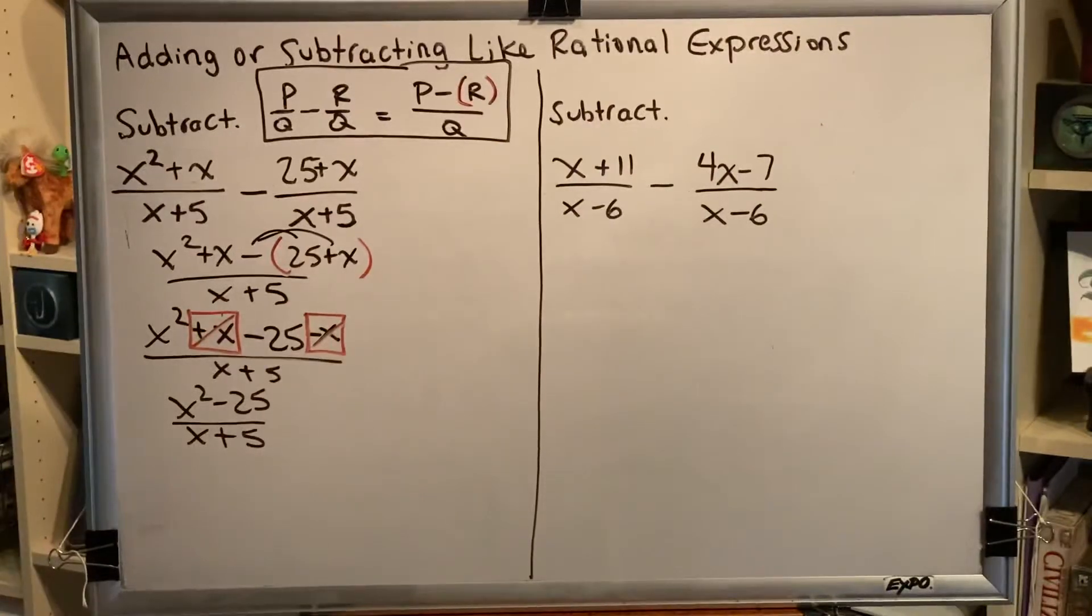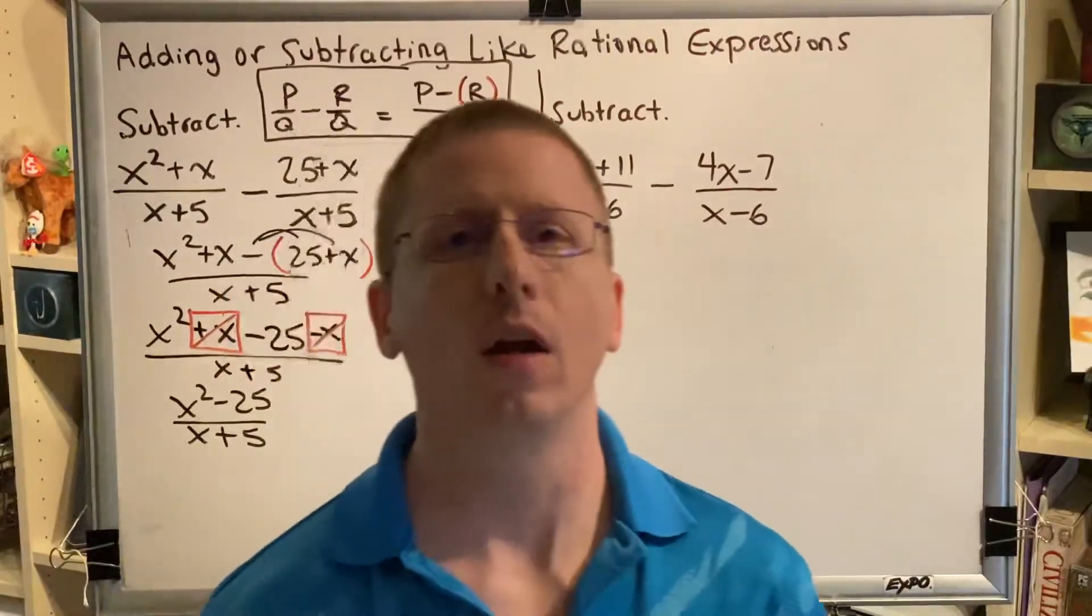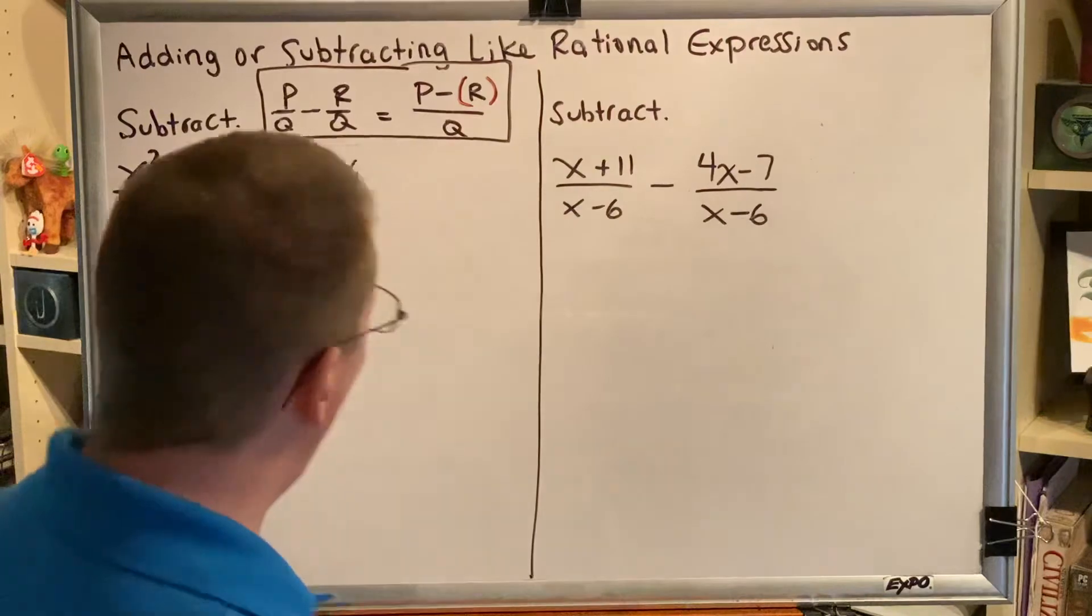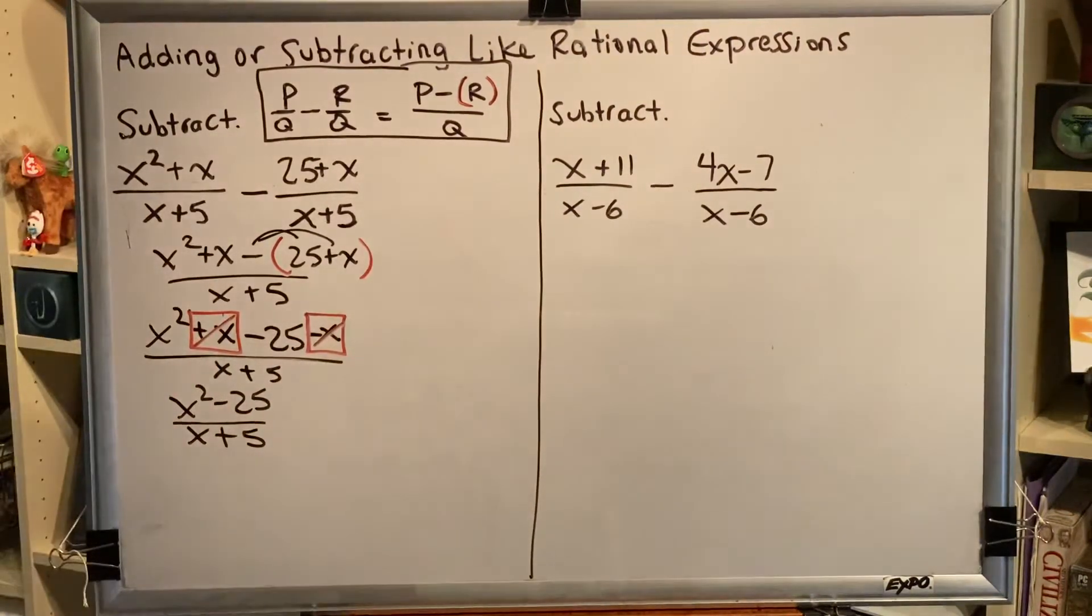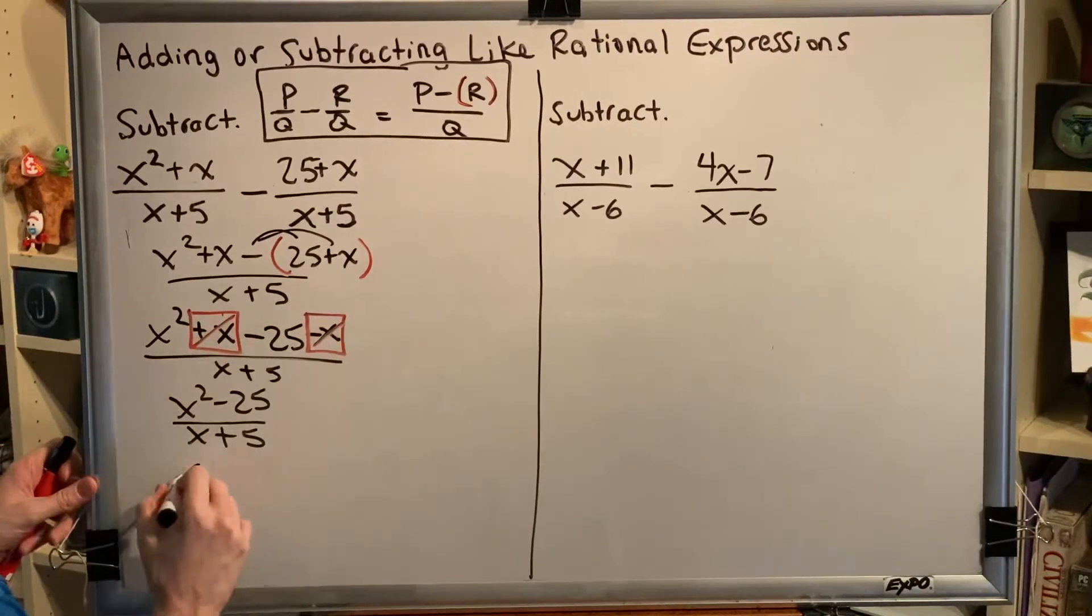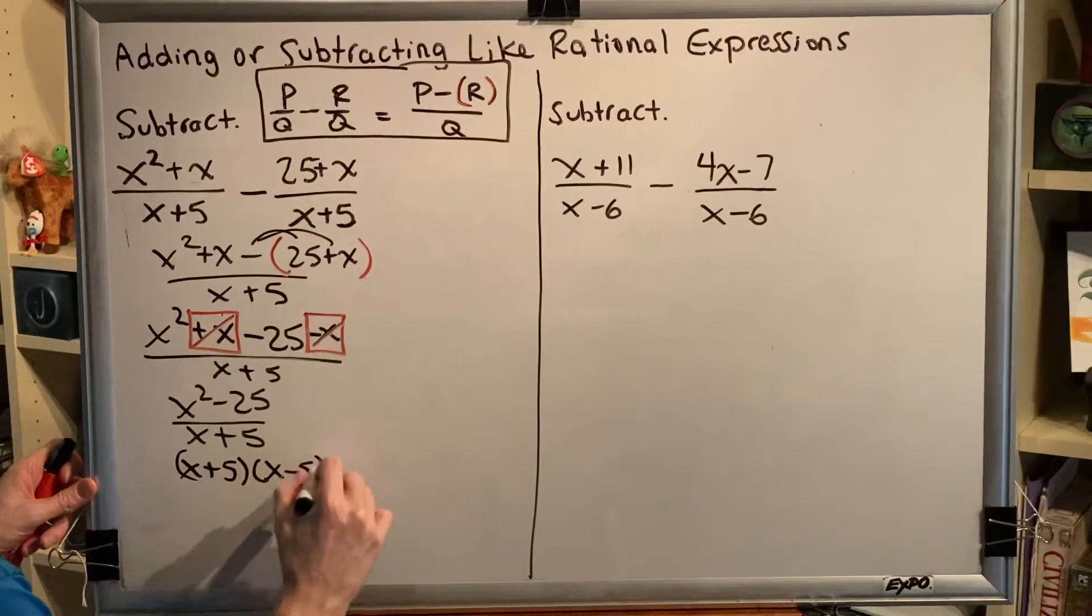We've now combined our two fractions into one. However, math builds on itself and we need a previous skill here, which is the skill for simplifying a rational expression. We have to factor all numerators and denominators and cancel common factors to one. It turns out this is a difference of squares, which factors as x plus 5, x minus 5.